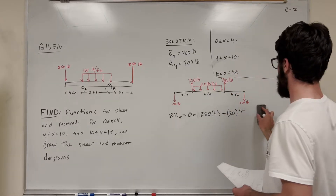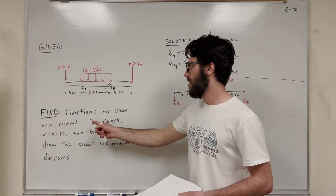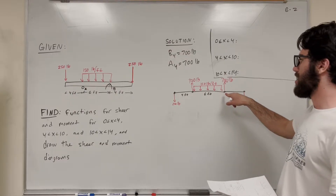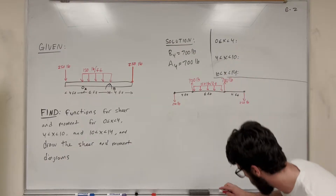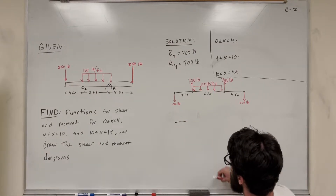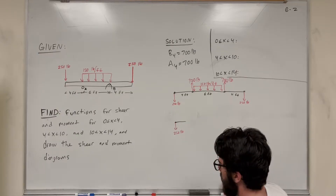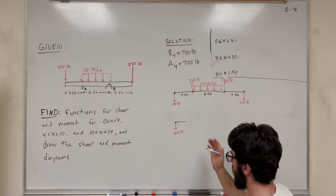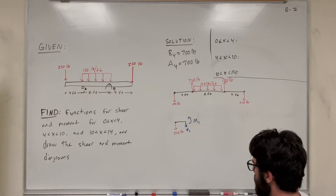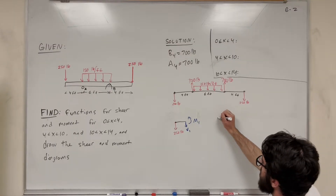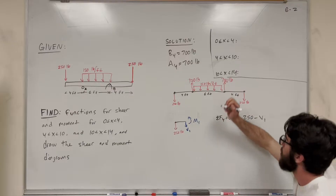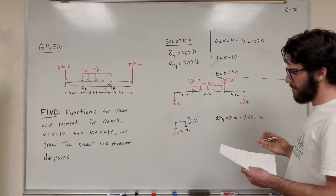Now let's find equations for each region. We want a function between 0 and 4 feet, then between A and B, and then between B and the end. Let's start with 0 to 4. We make a cut anywhere between 0 and 4 feet. We still have that negative 250 pounds. When you take a cut from the right side, shear V1 points downward and moment M1 acts at the cut. To solve for V1, we take the sum of forces in Y equal to zero: negative 250 minus V1 equals zero, so V1 equals negative 250 pounds — constant over the entire first region.